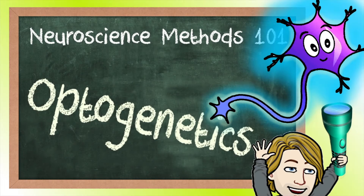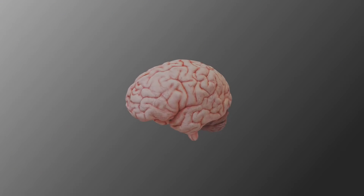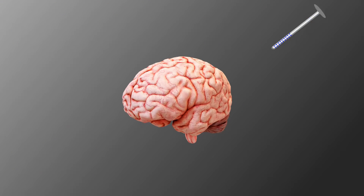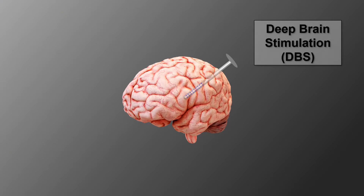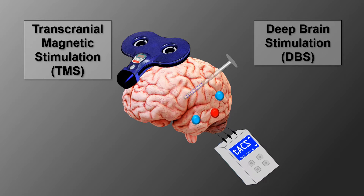Hello everyone and welcome back to Neuroscience Methods 101. Today we are going to talk about optogenetics. In neuroscience, various methods have been used to stimulate the brain, for example with magnetic or electric fields or with ultrasound.